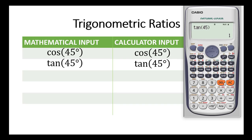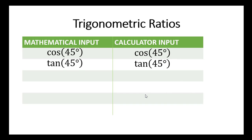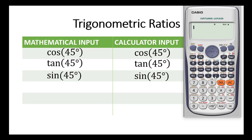And then we proceed to the next one, which is sine 45 degrees. You key in sine 45 degrees and then press equal to. So you press sine, then 45, close bracket and press equal to. The answer we get is the square root of 2 over 2.